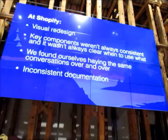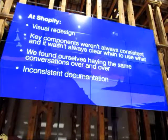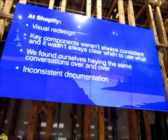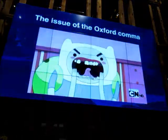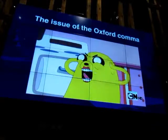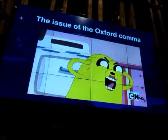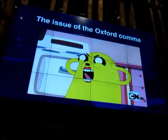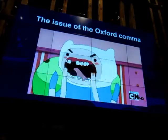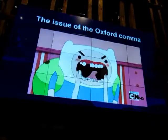As we looked across our products, it wasn't hard to tell that there were some key components that weren't consistent. A component is basically just a building block, a piece of our interface that gets snapped together and repeated over and over again. We also found ourselves having the same conversations over and over again. I come from a content strategy background, so I was familiar with the debate about whether to use the Oxford comma — also known as the serial comma — or not. That kind of thing pointed to a need for clear documentation about what we do. And by the way, we do use the Oxford comma at Shopify.